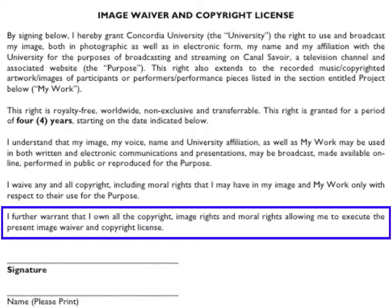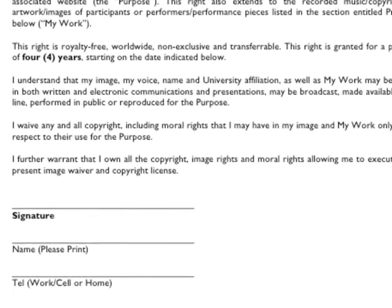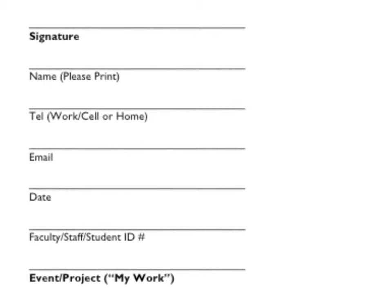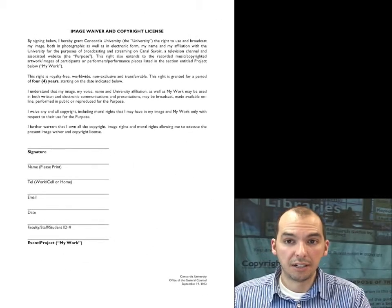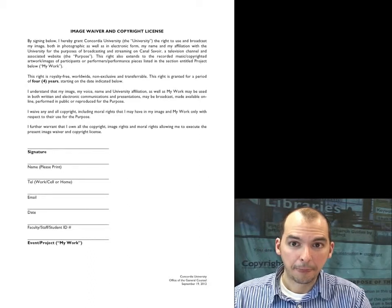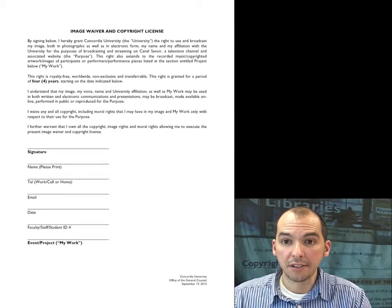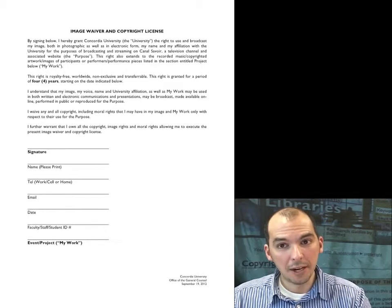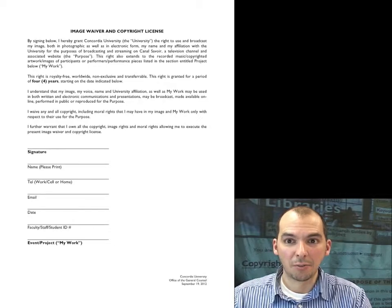This final paragraph reminds you that you're in charge of your project and will be responsible if anything goes wrong, which shouldn't be the case if you abide by the rules of copyright. Following these paragraphs, we ask that you sign and provide your name and contact information. Remember, this license will be in effect for four years, so provide contact information we can use even after you graduate. I hope that was a helpful explanation of this license and some insight about copyright and image rights when participating in the Canal Savoir project. Thanks for listening.